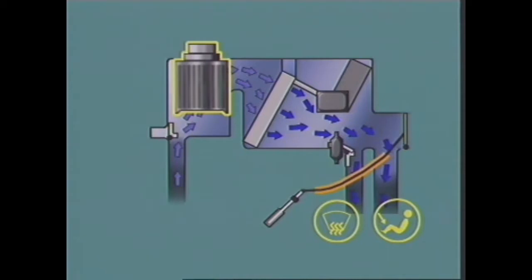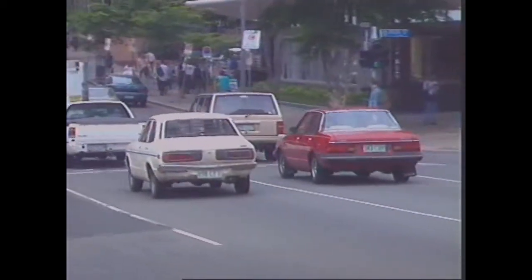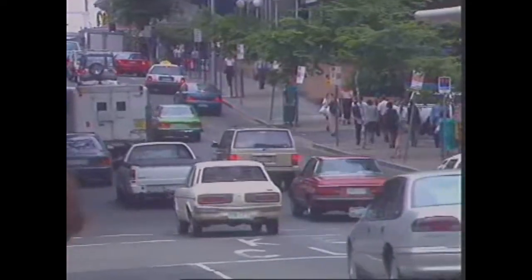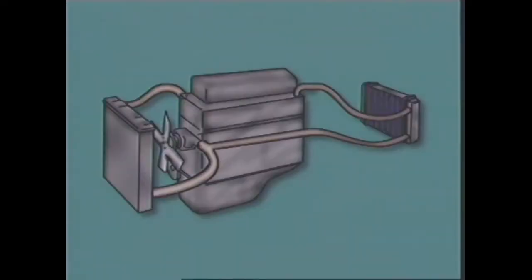A fan driven by an electric motor is used to assist airflow through the passenger compartment when demands are high or when vehicle speeds are low. In internal combustion engines, much of the heat generated is lost to the atmosphere, but some of this heat can be used to heat the incoming air. Engines that are liquid cooled direct heated coolant to a heater core to heat the air.